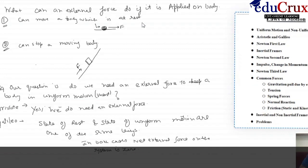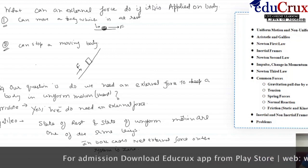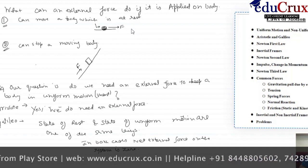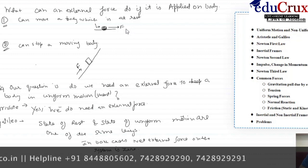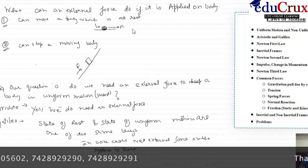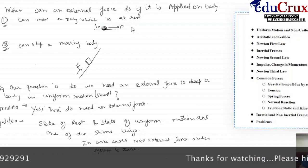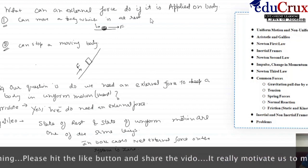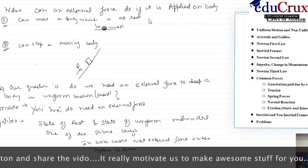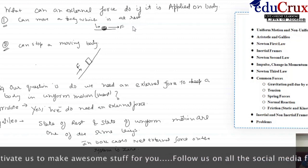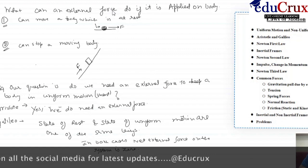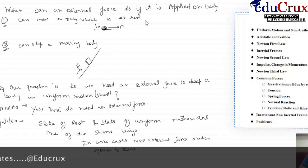Our main question is: what can an external force do if I apply an external force on a body? Suppose I have a football that is at rest, and if I apply a force F on it — say from a kick — I will apply an external force on it and it will start to move from its state of rest. So an external force F can move a body from rest into a state of motion, and the body at rest will start to move in the direction of the applied force.